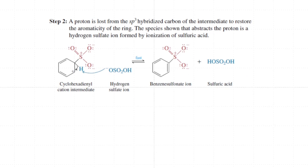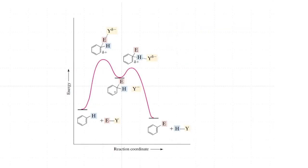Once this is formed, the aromaticity is restored, so we would expect this process is quite fast. One aspect about this reaction that is different from regular electrophilic aromatic substitution is that it requires a reasonable amount of heat, and second, it produces an anion which is the benzene sulfate ion.